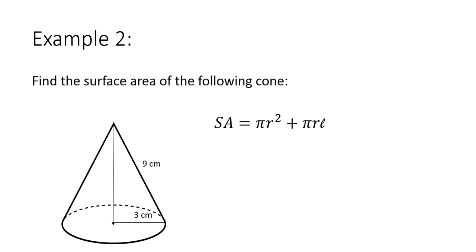9 is the slant height here. It is given. So we don't need to do Pythagorean theorem or anything like that. We just substitute everything in the calculator. So π 3 squared plus π 3 plus π times 3 times 9. Put that all in your calculator. Don't split it up or you're going to end up having issues with rounding. Put it all in there all at once. And you get the surface area to be 113.1 centimeters squared. And our units for surface area are squared.